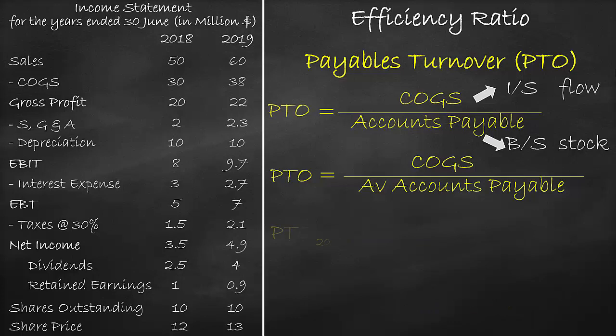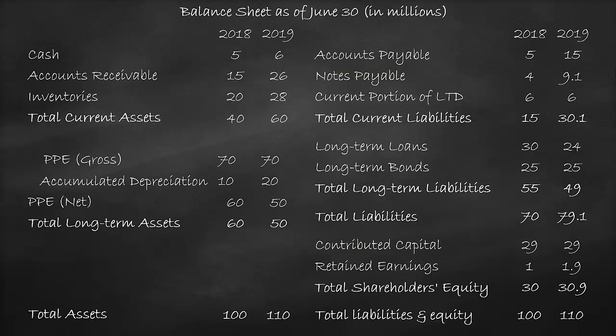Next, let's calculate the payables turnover for the year 2019. Cost of goods sold in 2019 is equal to $38 million divided by — let's look at the balance sheet for the average accounts payable in the years 2019 and 2018.